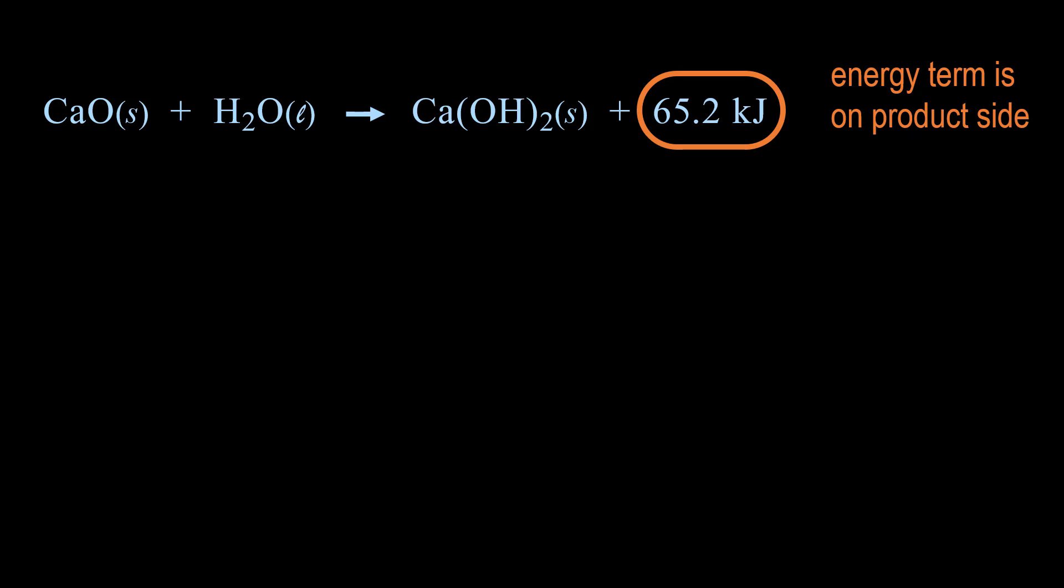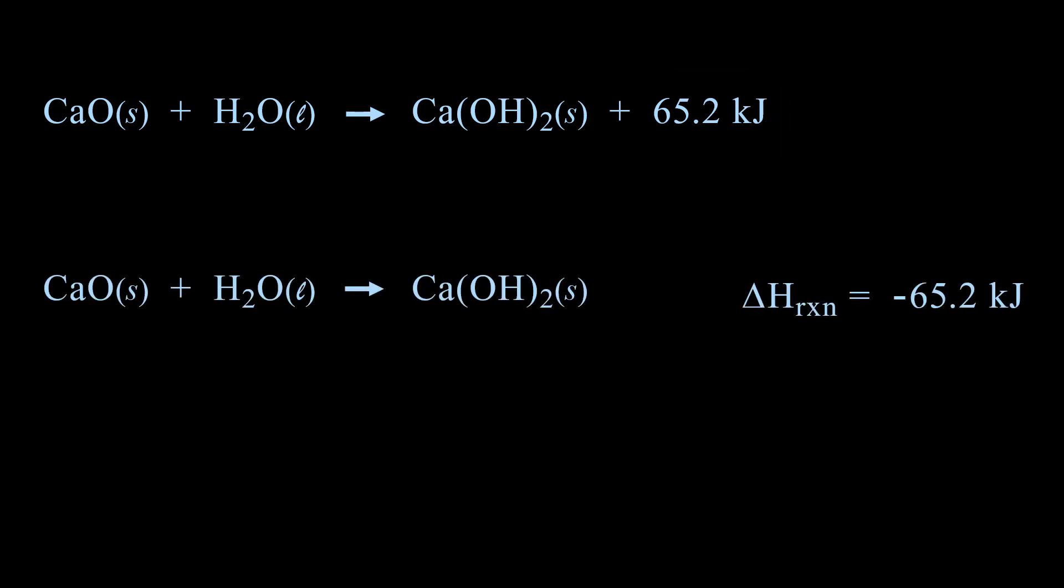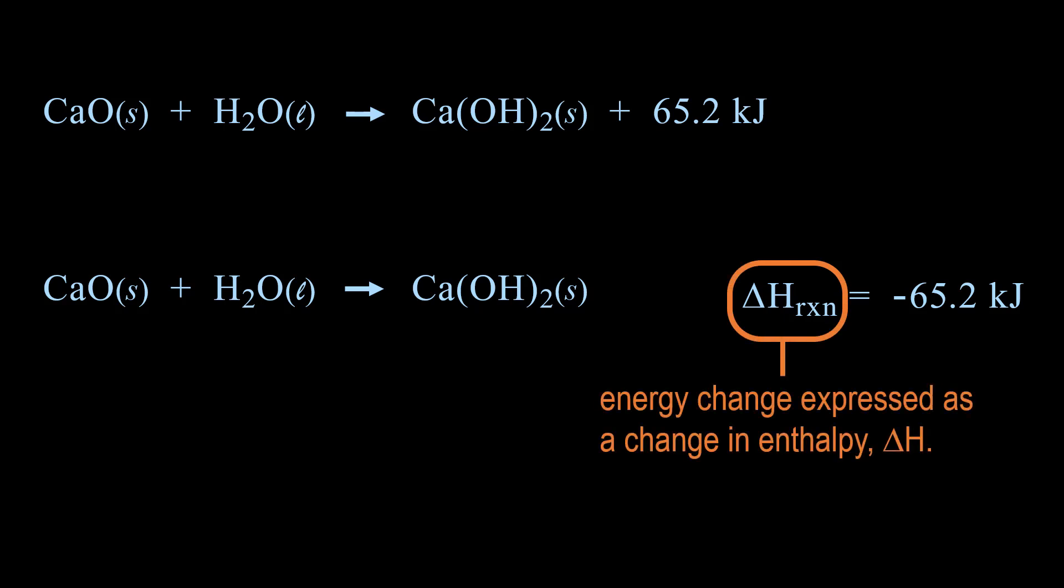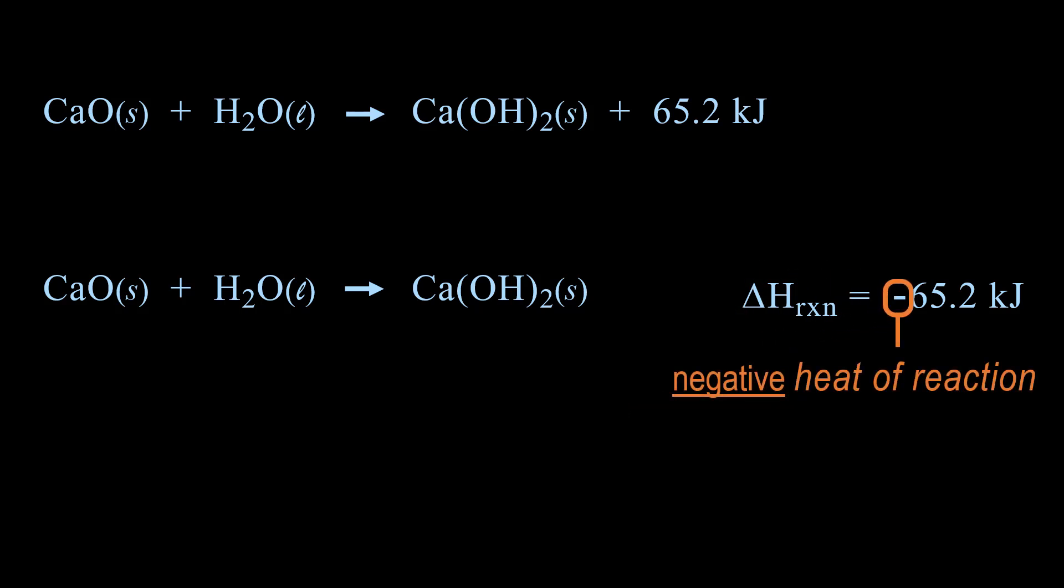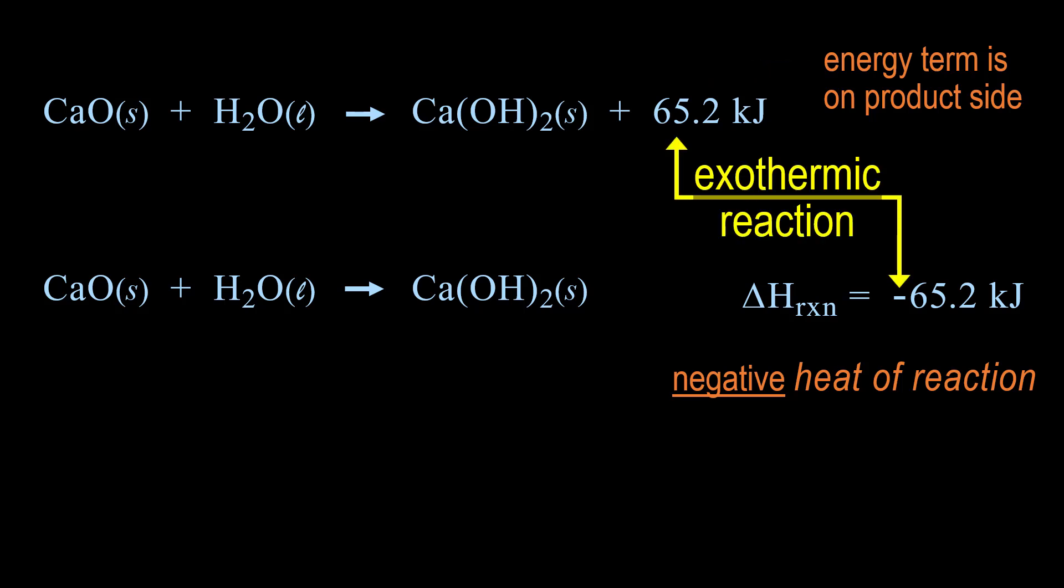But first we need to understand that the energy term can also be expressed apart from the reaction as its change in enthalpy, delta H, which is called the heat of reaction. We see that this is a negative heat of reaction, which has the same meaning as placing the energy term in the equation on the product side, both of which tell us that this is an exothermic reaction.